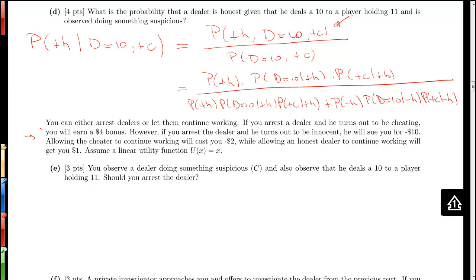Right along now you can either arrest dealers or let them continue working. If you arrest the dealer and it turns out to be cheating you will earn a four dollar bonus. However if you arrest the dealer and he turns out to be innocent he will sue you for ten dollars.